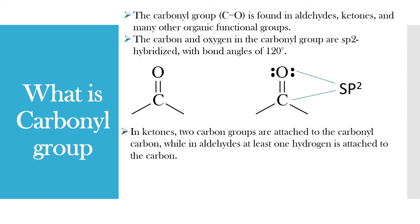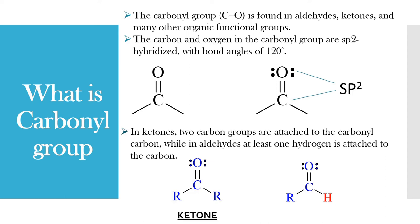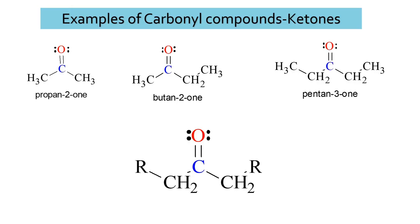In ketones, two carbon groups are attached to the carbonyl carbon, while in aldehydes, at least one hydrogen is attached to the carbonyl carbon. This is an example of a ketone, and this is considered an aldehyde.